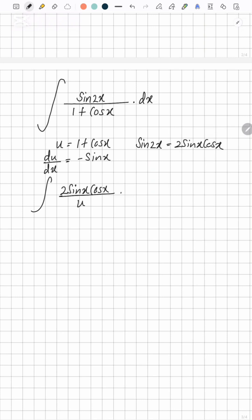So du over negative sin x equals to dx. The sin x cancels off and now it's minus 2 in front. Cos x is going to be u minus 1, so it's u minus 1 over u.